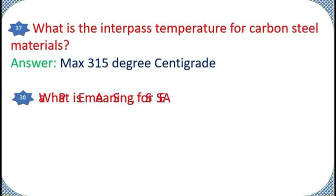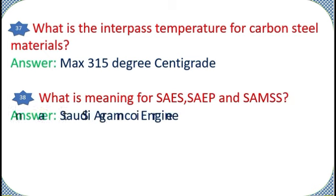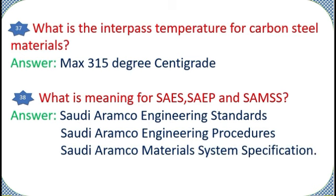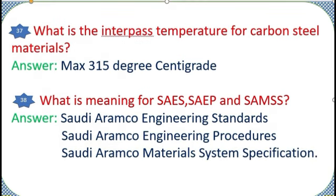What is the interpass temperature for carbon steel materials? Answer: Max 315 degrees centigrade. What is meaning for SAES, SAEP, and SAMS? Answer: Saudi Aramco Engineering Standards, Saudi Aramco Engineering Procedures, Saudi Aramco Materials System Specification.